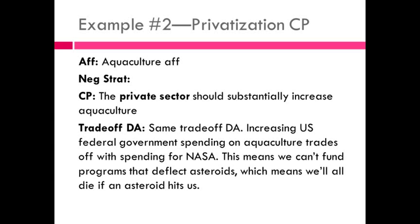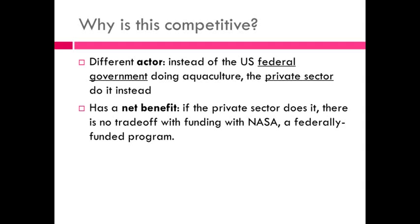Here's another example: the privatization counter plan. The affirmative is the USFG does aquaculture, just like before, but now the counter plan is that the private sector should substantially increase aquaculture. The net benefit is the same trade-off DA — increasing federal government spending on aquaculture trades off with NASA spending, meaning we can't solve asteroids. So why is this competitive? Again, it's a different actor: instead of the federal government, the private sector does it. If the private sector does it, there's no trade-off with NASA funding because the counter plan doesn't have the federal government fund the plan — it has the private sector fund it.